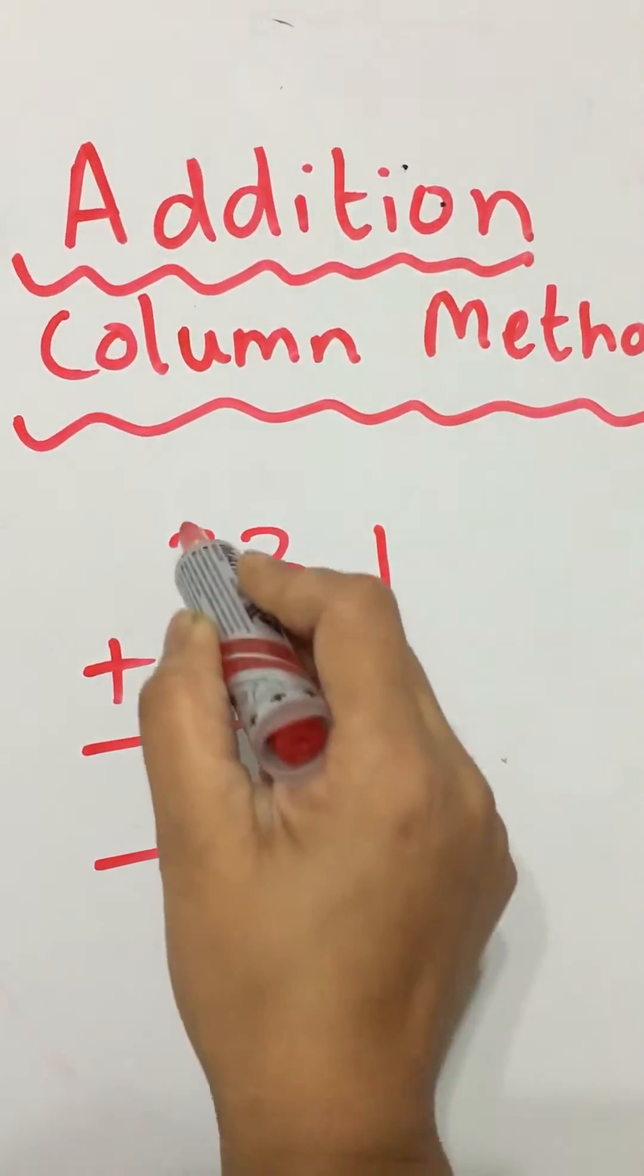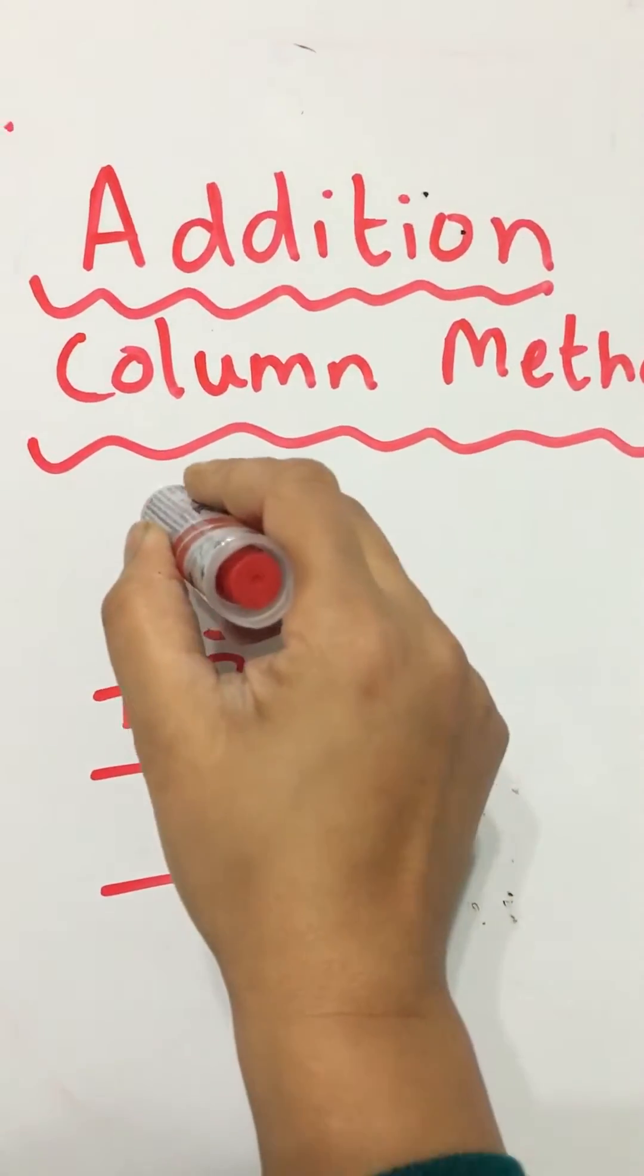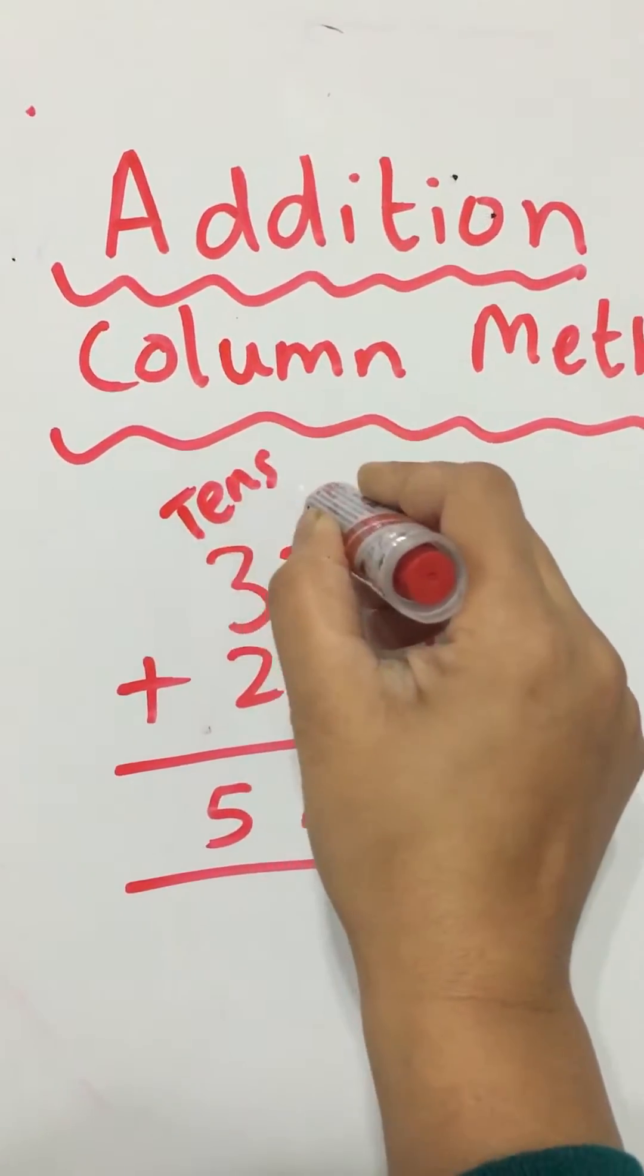In each column notice that they're all in nice columns. This is the tens and this is the ones.